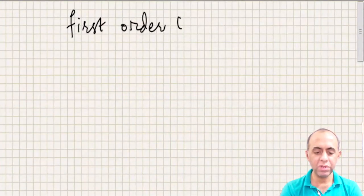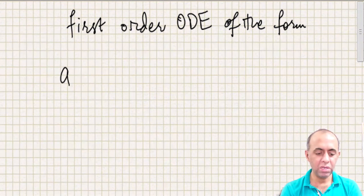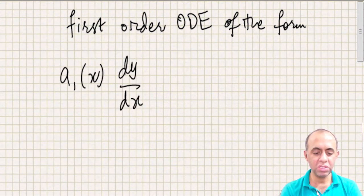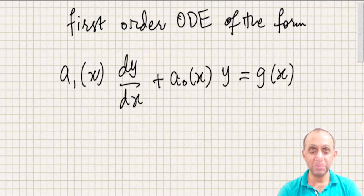The first method we are looking at is for a specific type of differential equations. Written in standard form, a first-order ODE looks like: a0(x) dy/dx — or using y' — plus a1(x) y equals g(x), where a0 and a1 are functions of x. These are specific types of differential equations which are not separable.